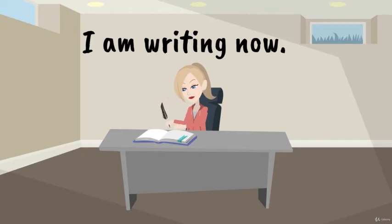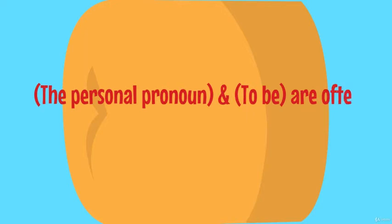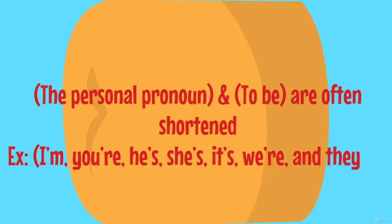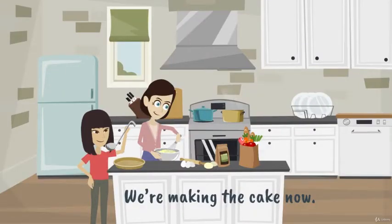For example, I am writing now. The personal pronoun and to be are often shortened in I'm, you're, he's, she's, it's, we're and they're. We're making a cake now.